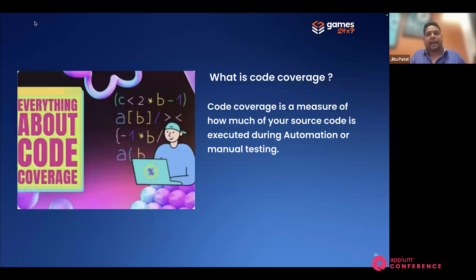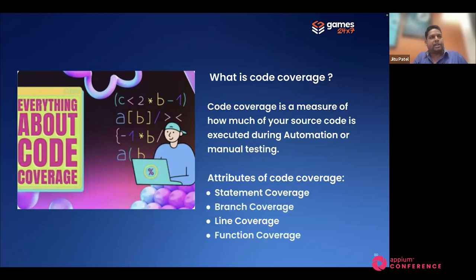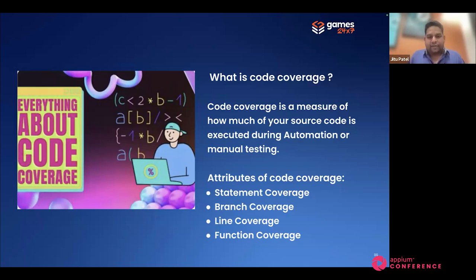The benefit is you'll find out edge case scenarios or missing case scenarios which are not being tested during your testing cycle before they go to production. There are four code coverage attributes we need to look at: statement coverage — how many statements in a class are covered; branch coverage — if/else conditions and switch cases; line coverage — how many lines are covered in a class; and functional coverage — how many methods written in a class are covered during testing.